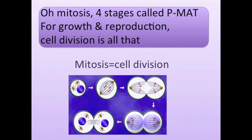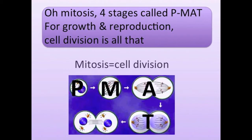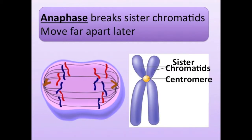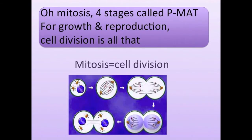Mitosis has four stages, call PMAT. For growth and reproduction, cell division is all that. In metaphase the chromosomes are lined at the equator. Anaphase breaks sister chromatids, move far apart later.